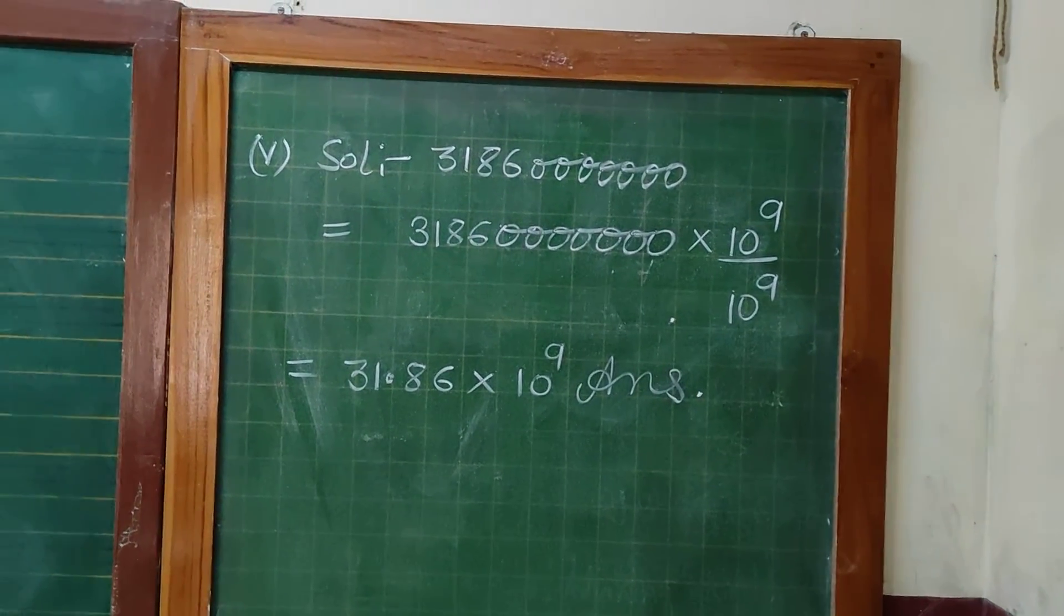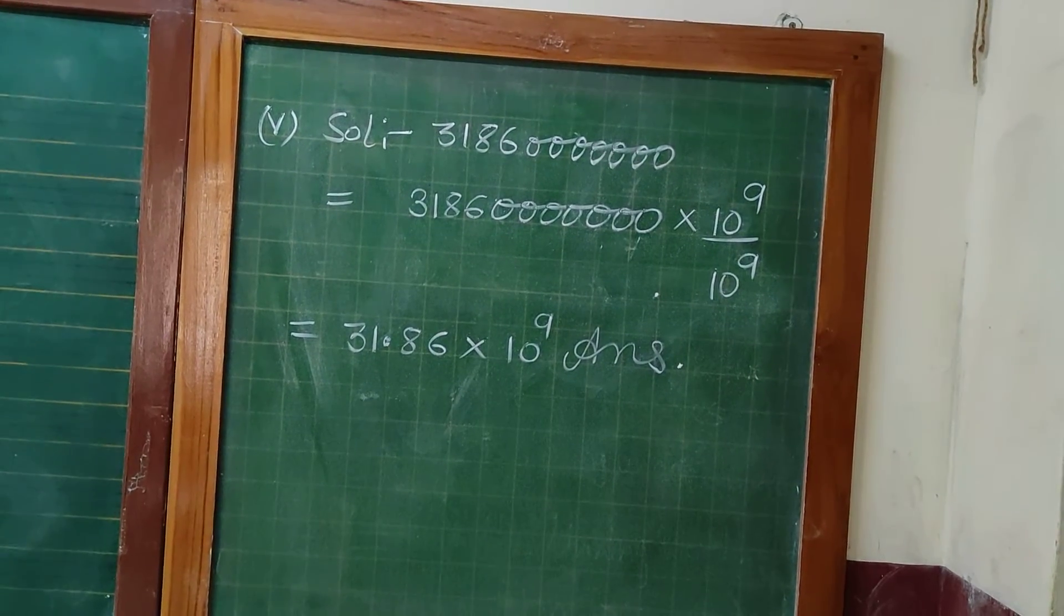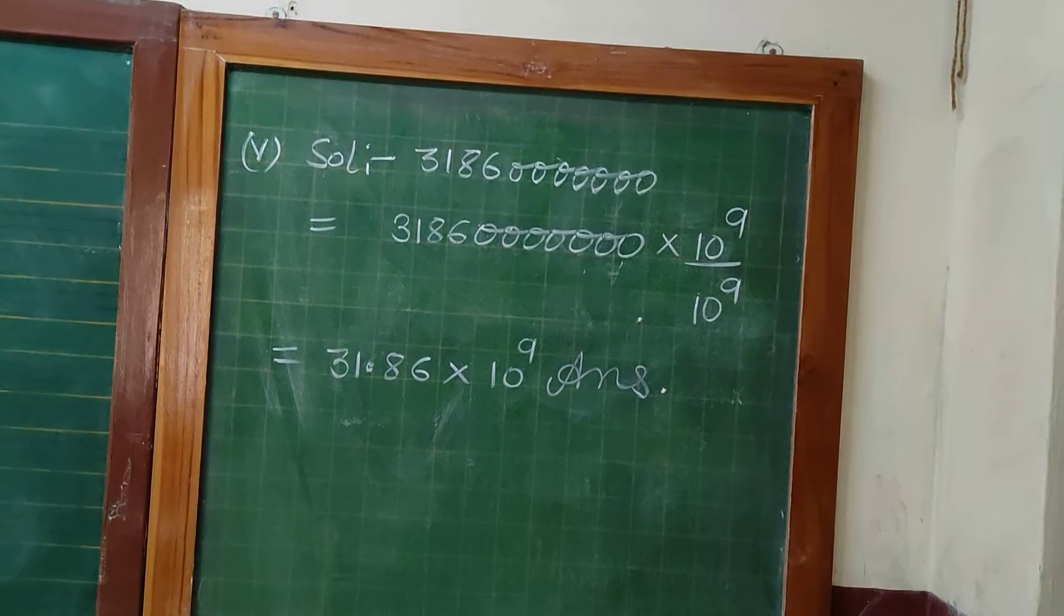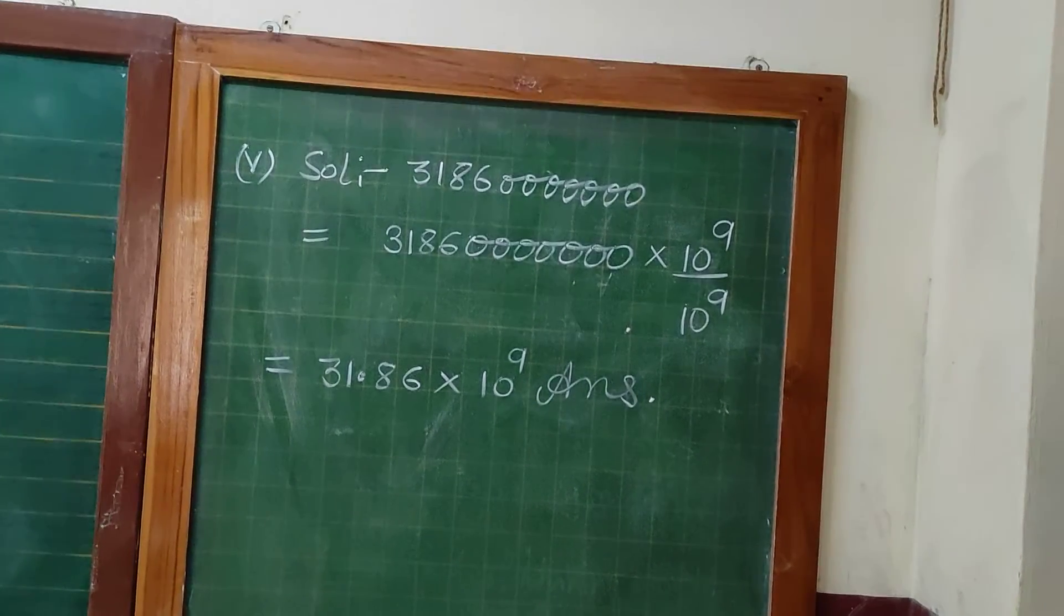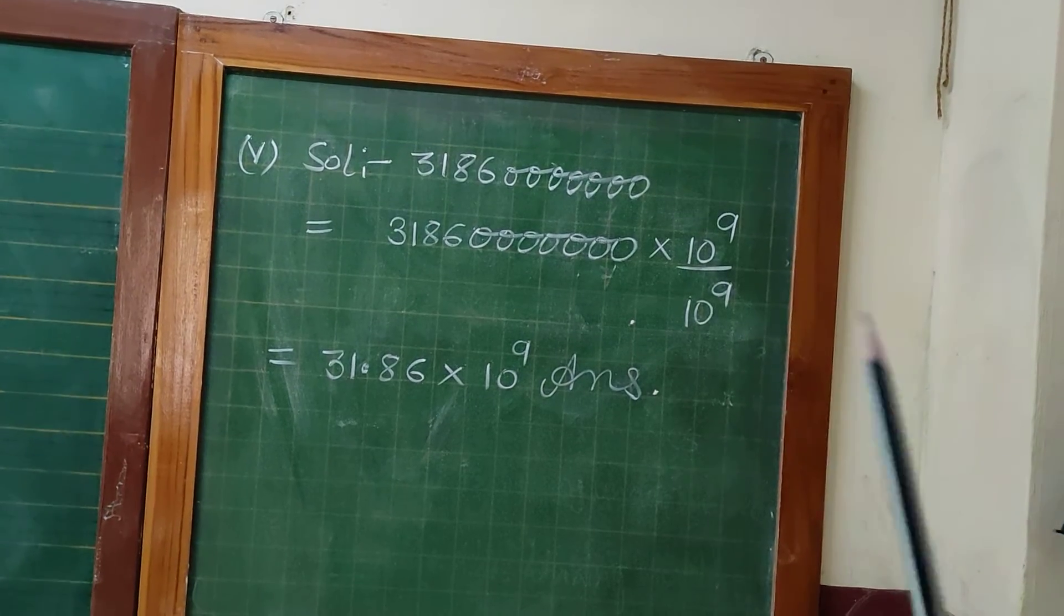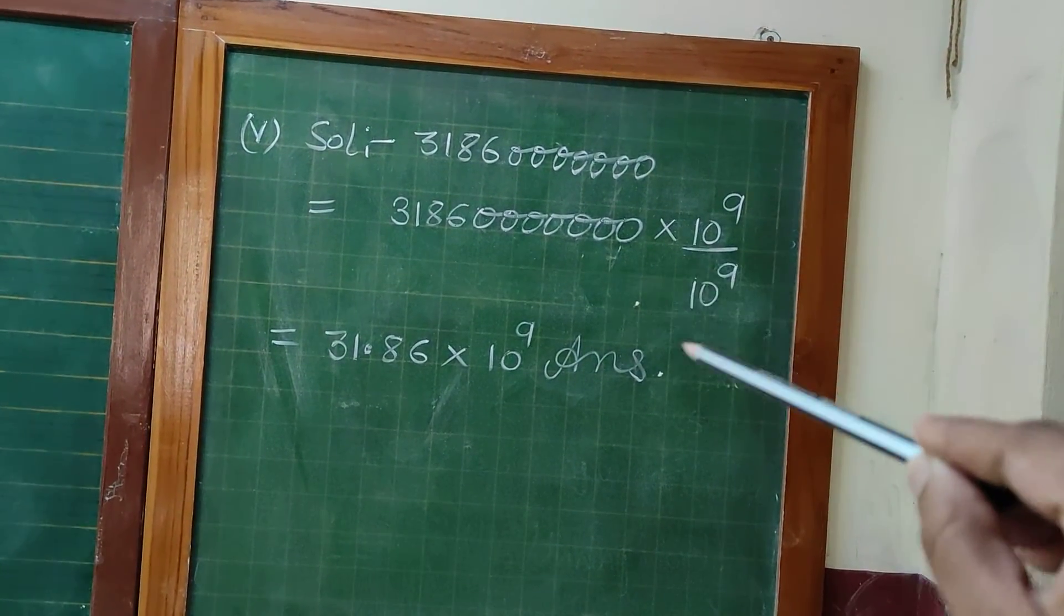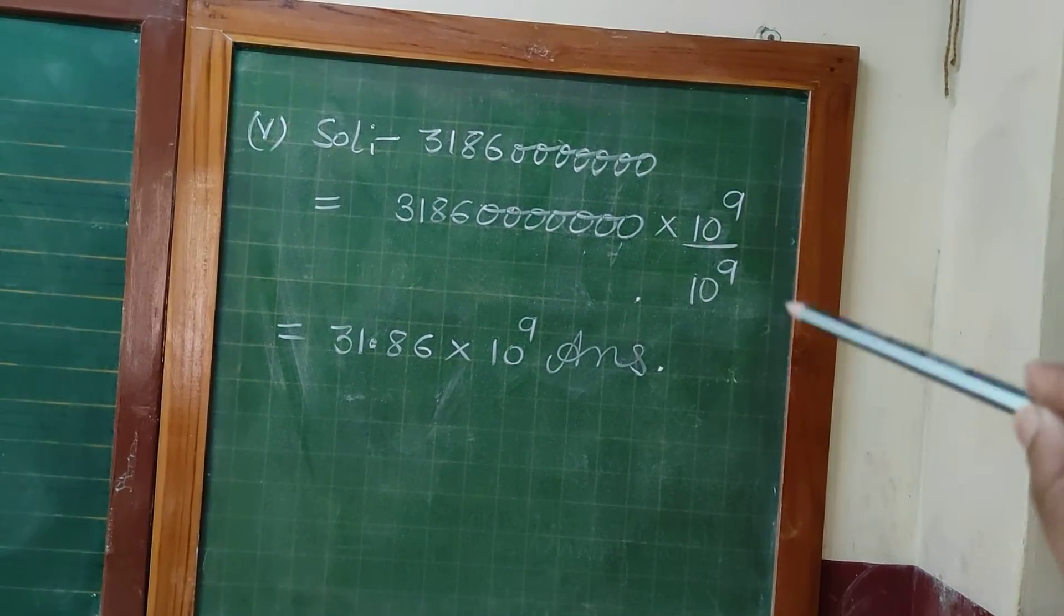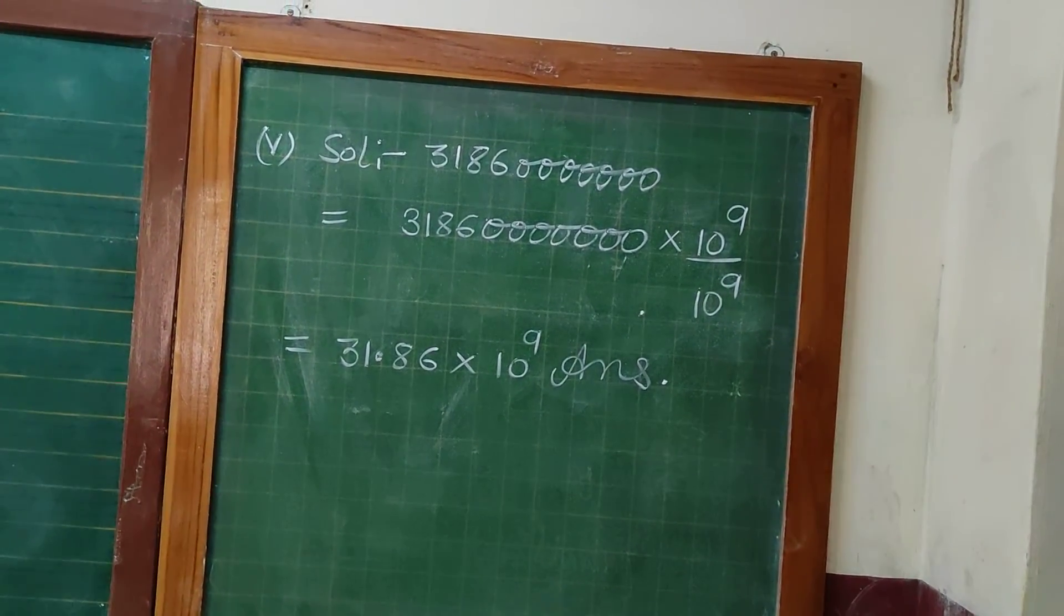In the standard form, always we write decimal up to 2 digits and in the exponential form 10 to the power exponent we will write. You can see here decimal is here and we want to send it to the left hand side, so this exponential form we will use. So 31.86 into 10 to the power 9 will be the answer.